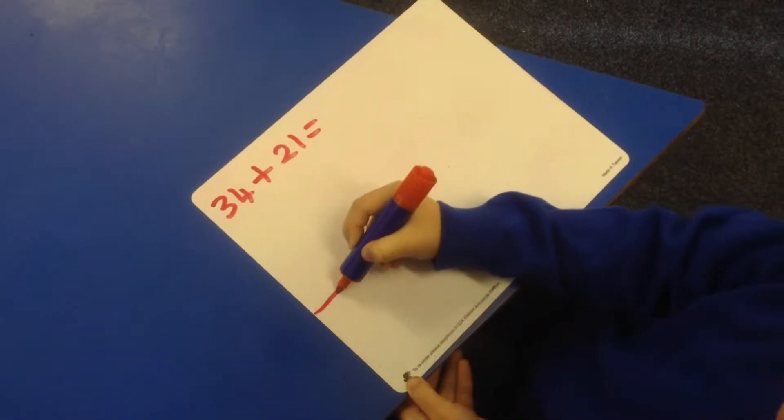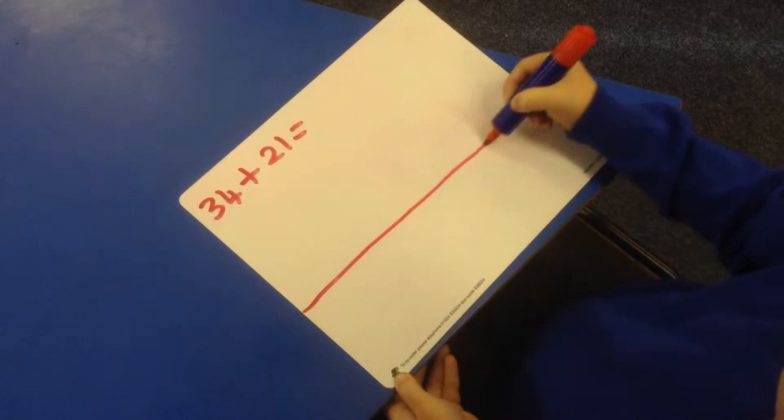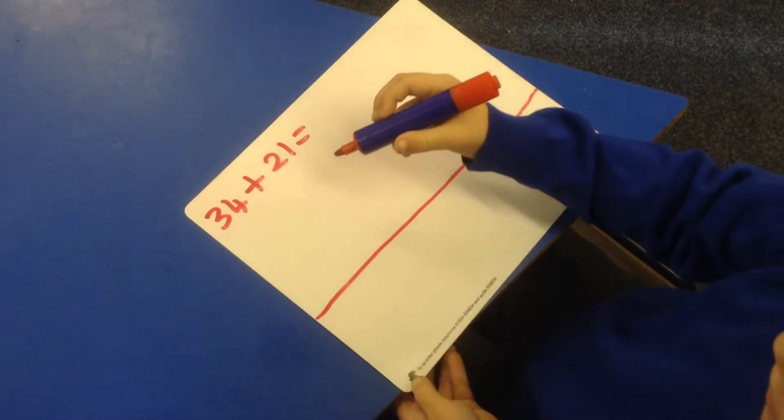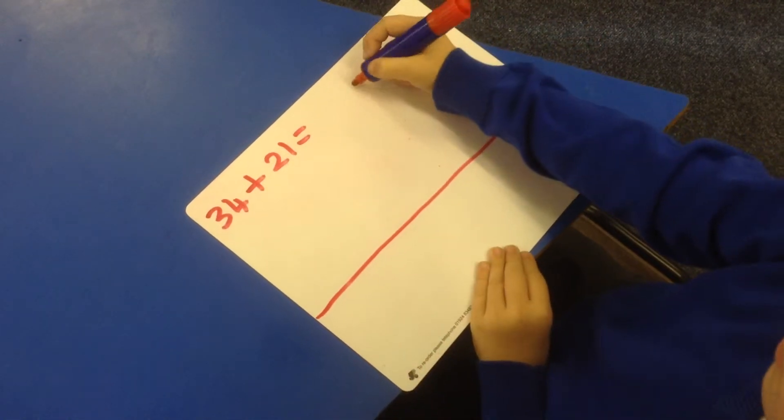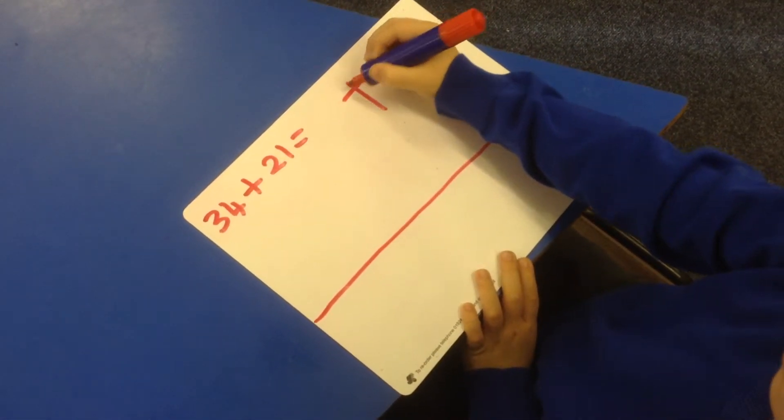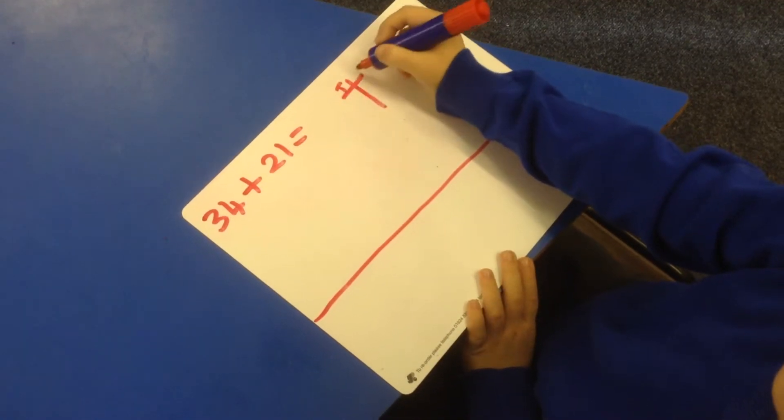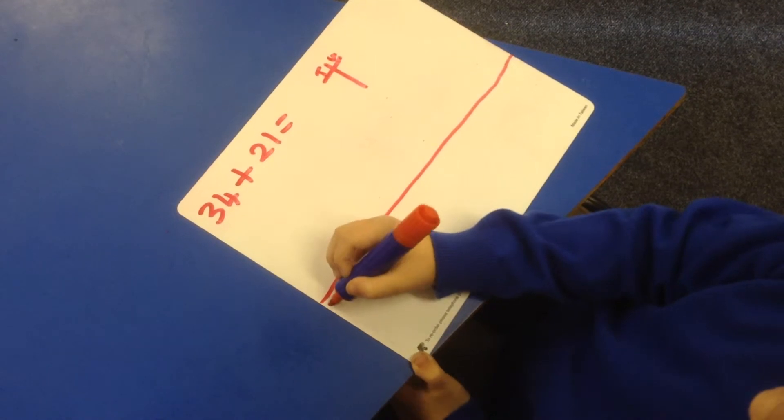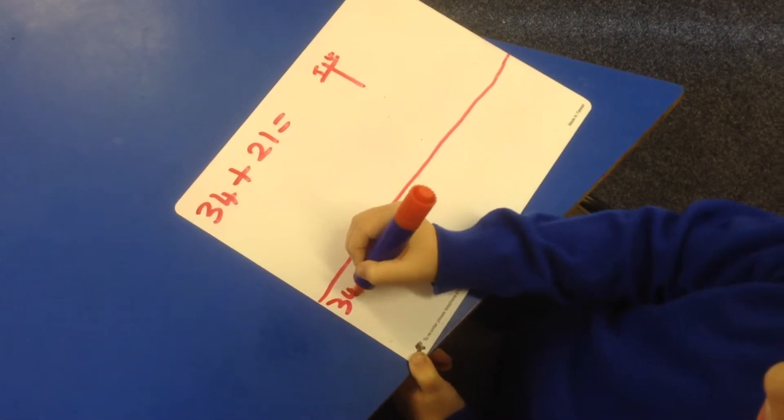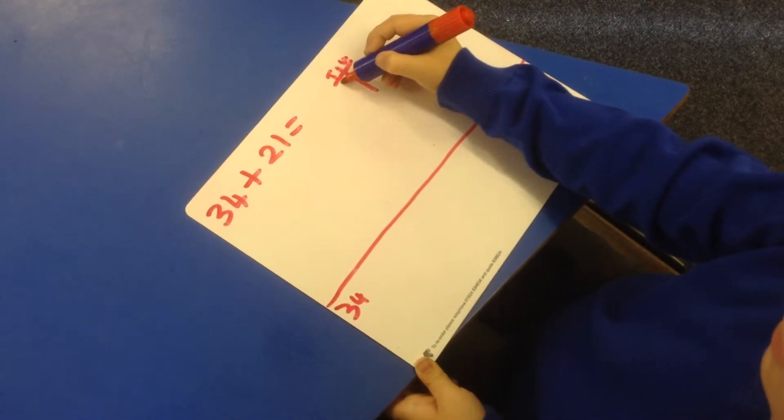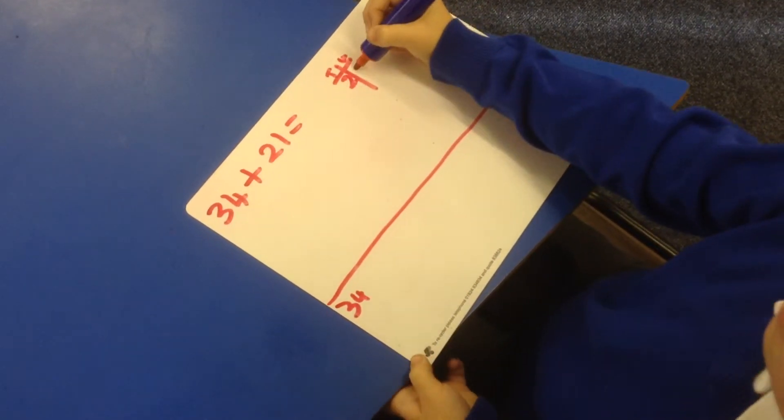First, you're going to put a line down there, and then you're going to put a line there with another line across. Then you're going to put a 12 of 10 of the units, then you're going to put the number 34 down there, and you're going to split the number up.